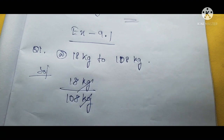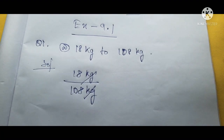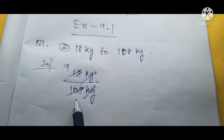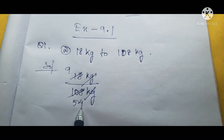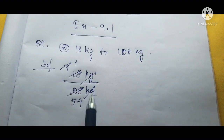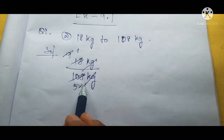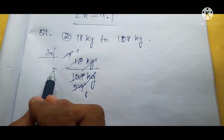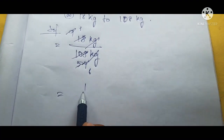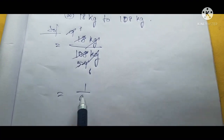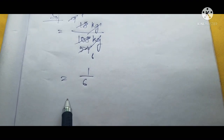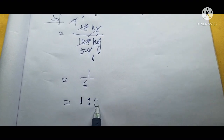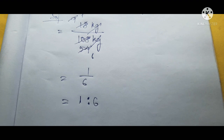We cancel the kg units. Then cancel by 2: 2 nines are 18, 2 fives are 10. Further, 9 ones are 9 and 9 sixes are 54. The fraction we get is 1 by 6, and converting to a ratio gives us 1 is to 6. So this is the answer.